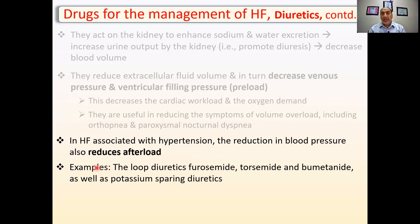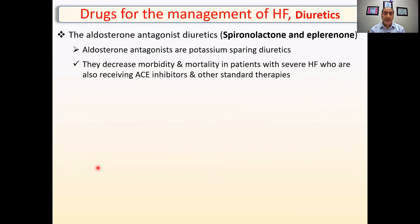Examples include the loop diuretics like furosemide, torsemide, and bumetanide, and the potassium-sparing diuretics, which will be discussed in the next slide, like spironolactone and eplerenone. They are potassium-sparing diuretics — the 'spiro' in spironolactone may help as a mnemonic.